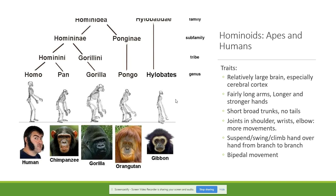Some hominoids can suspend, swing, and climb hand over hand from branch to branch — we call that movement brachiation. Some of them can also do bipedal movement, but only humans are able to do bipedal movement all the time. For example, a chimpanzee can walk upright for a while, but after a while it will get tired and will have to use its knuckles for support.